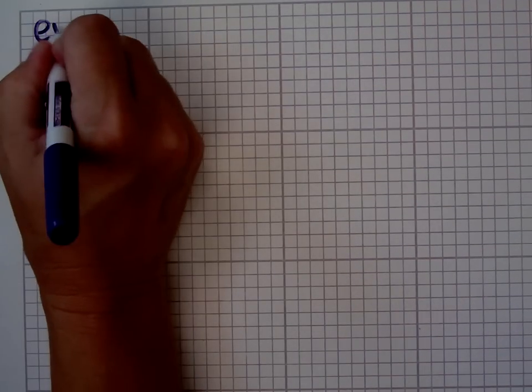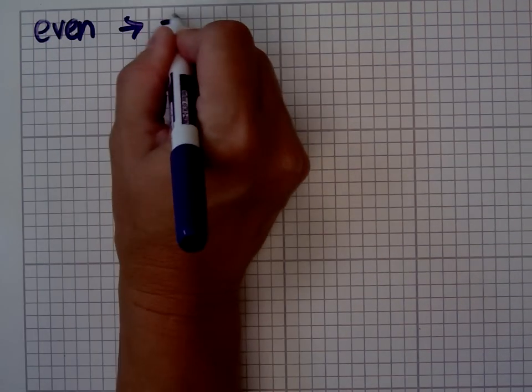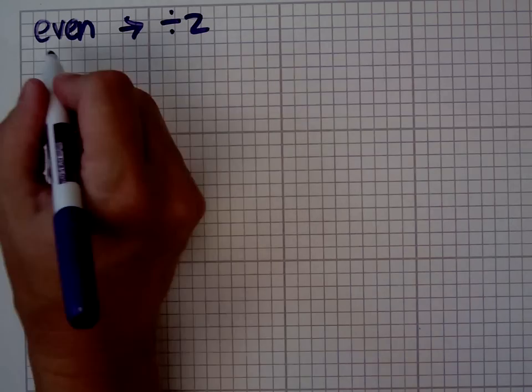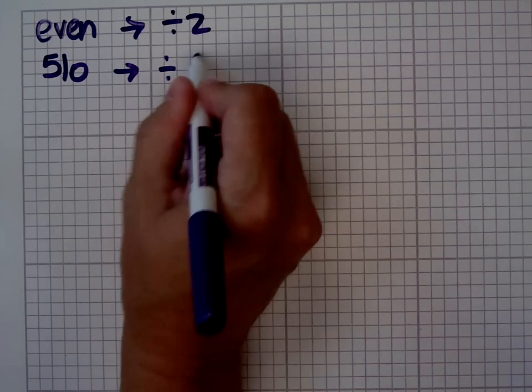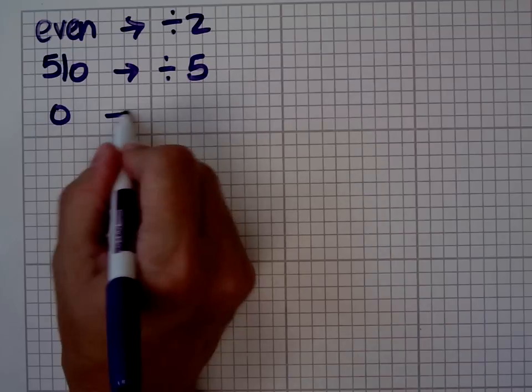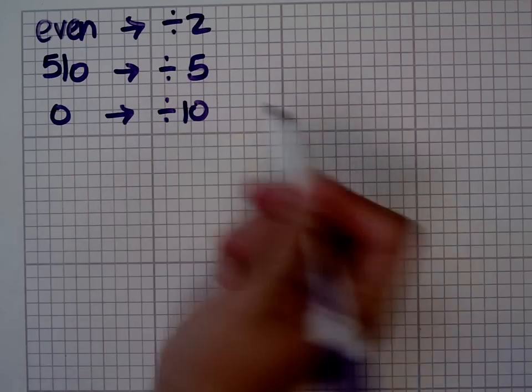We all know that numbers that are even are divisible by 2. We all know that numbers that end in a 5 or a 0 are divisible by 5. And we all know that numbers that end in a 0 are evenly divisible by 10.